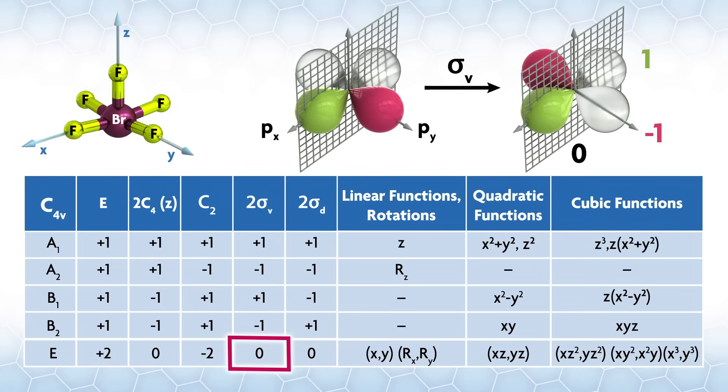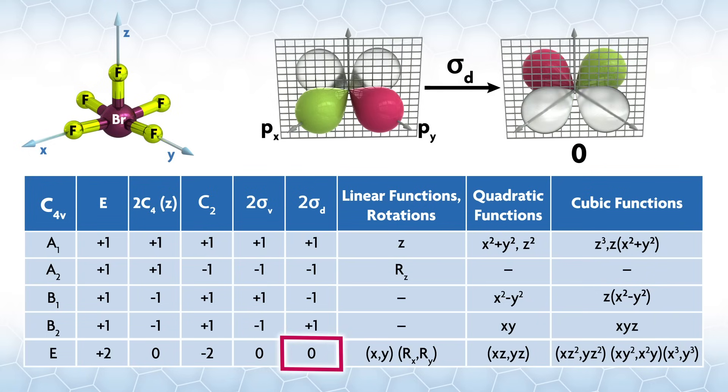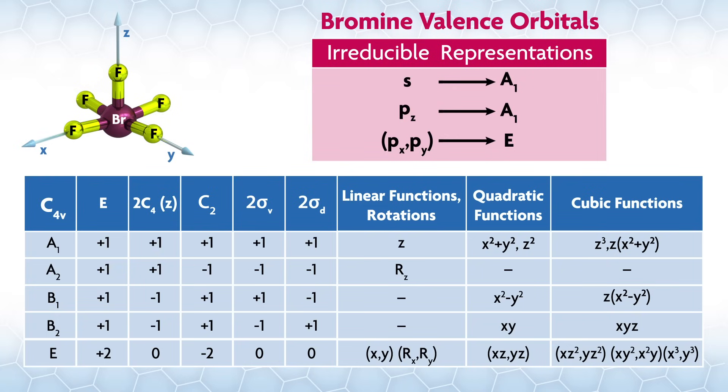The sigma v operations are along the x and y axes. The character will be the same regardless of which plane of symmetry we look at, so let's do the one along x. The orbital along the mirror plane doesn't move, but the py inverts its phase, so one orbital gives a plus one and the other minus one for overall zero. The sigma d operations are between the axes, interconverting the orbitals. Since the orbitals move, the character is also zero. For the central atom, we have looked at the irreducible representations that correspond to the valence orbitals on bromine, which look like this.